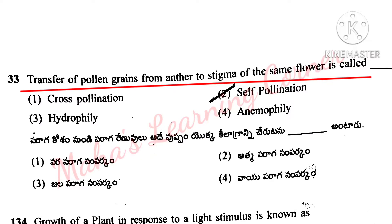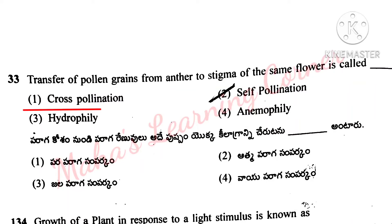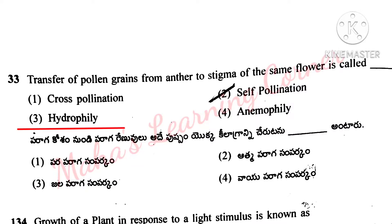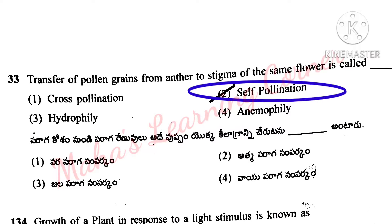Transfer of pollen grains from anther to stigma of the same flower is called: cross pollination, self pollination, hydrophily, anemophily. Correct answer option 2: self pollination.